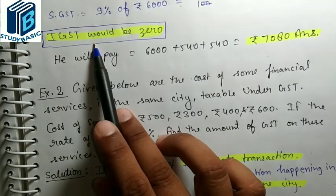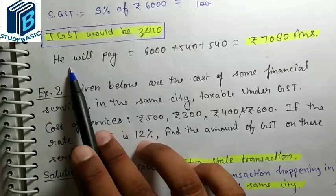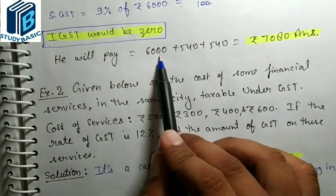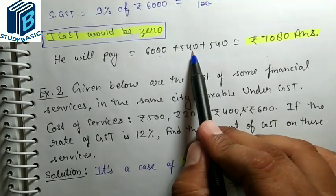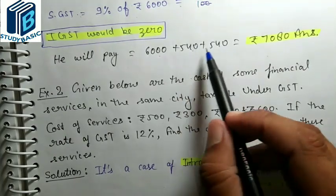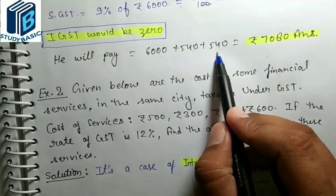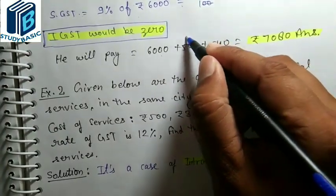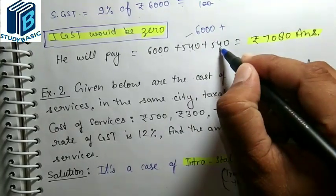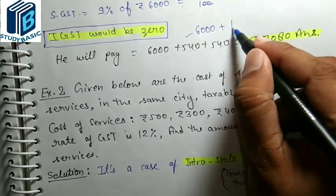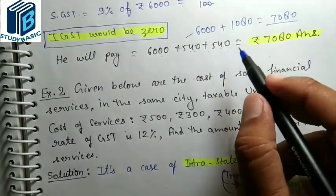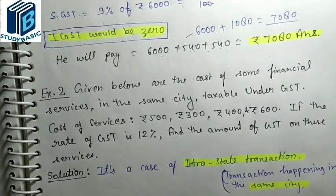For an inter-state transaction, IGST would apply and the central government collects it, then divides it equally between central and state governments. Here, the dealer will pay: 6000 (cost) plus 540 (CGST) plus 540 (SGST). Since both GST values are the same, we can write 6000 plus 2×540 = 6000 + 1080 = Rs. 7080.